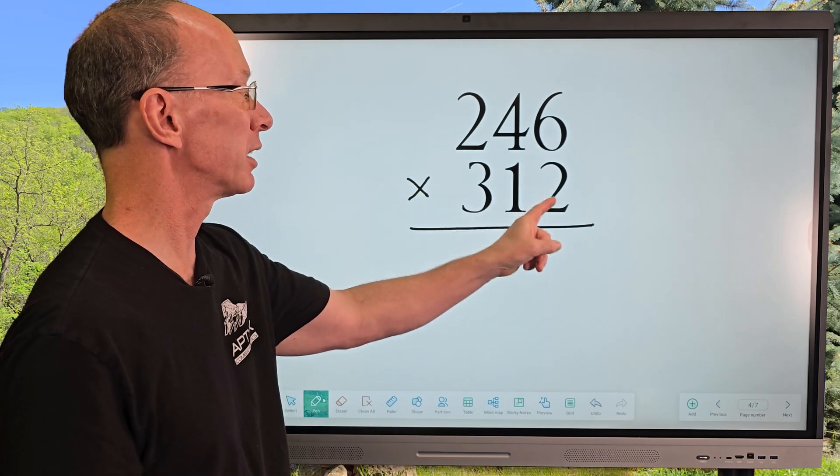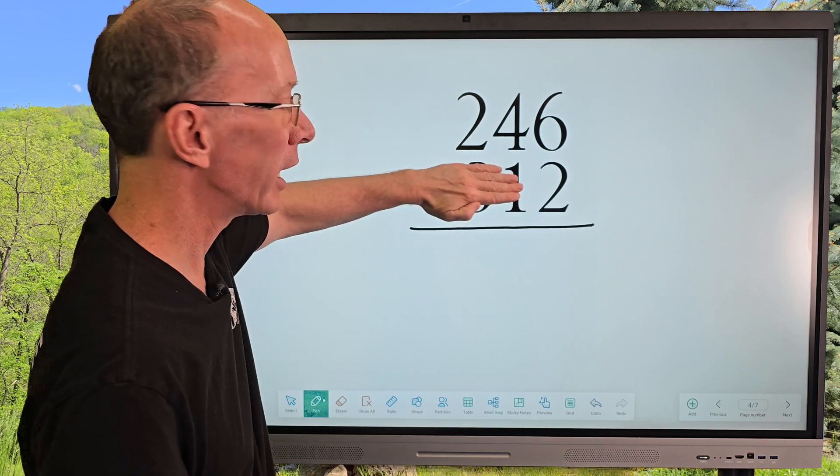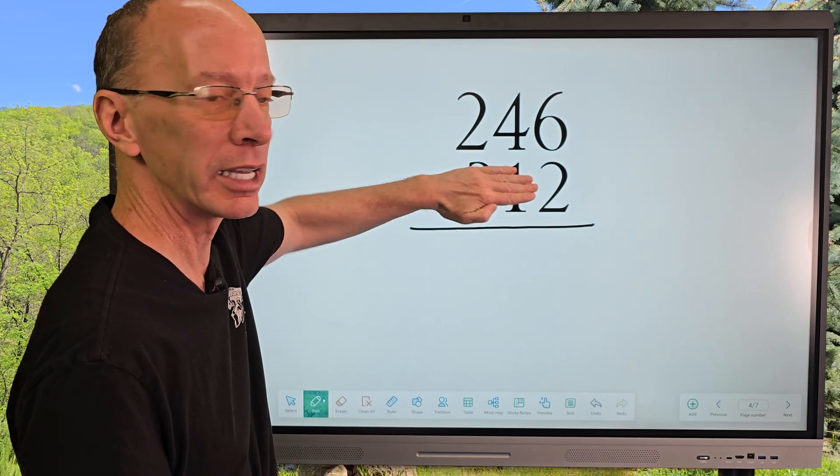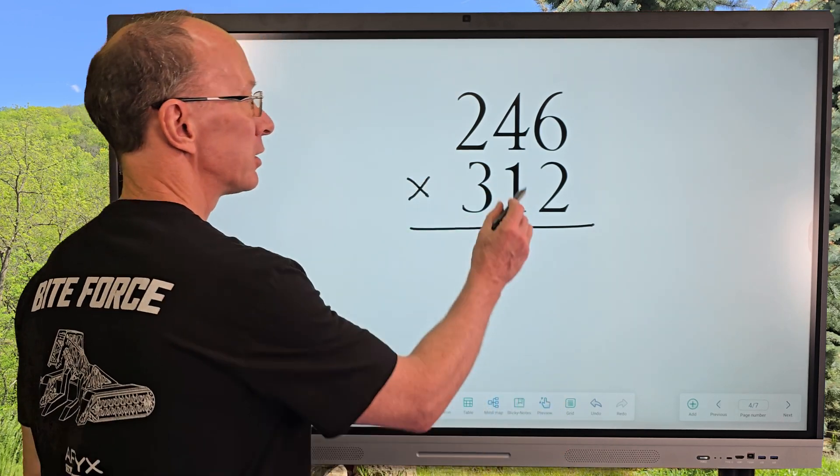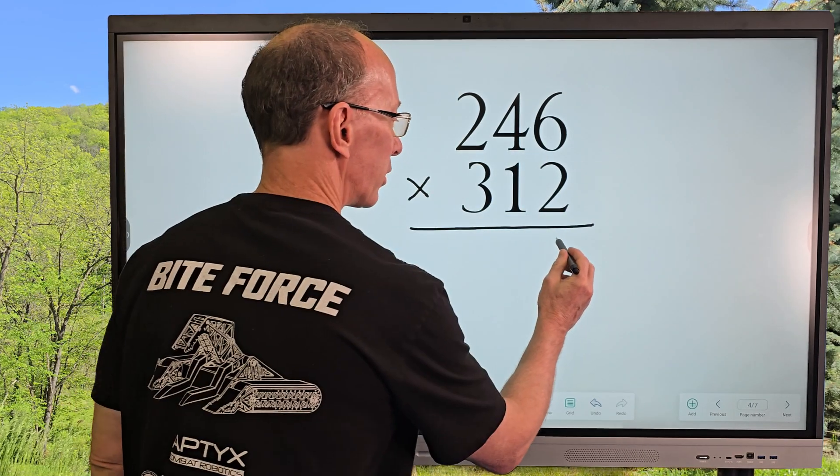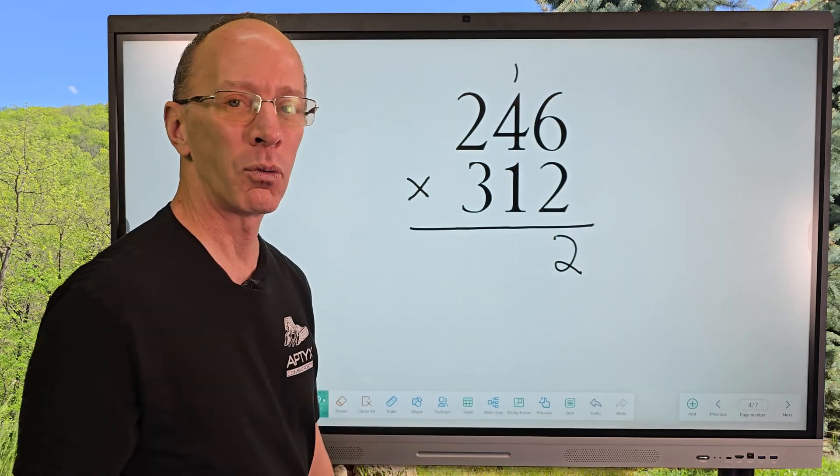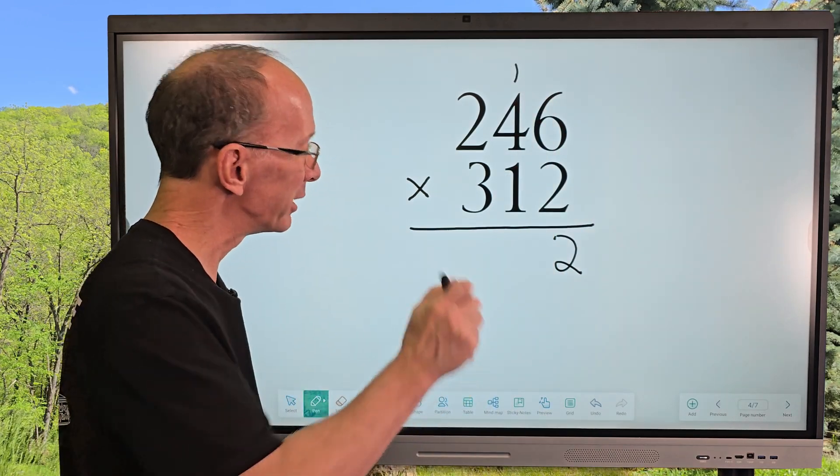We're going to take 2 times 6, then 2 times 4, then 2 times 2. We're going to work on those numbers. We're kind of going to ignore the 3 and the 1 for right now. So let's go ahead and take 2 times 6 equals 12. So I go ahead and put the 12 right here, and I put the 1 up there. We're going to add that 1 in a little bit. Not yet, but in a little bit.